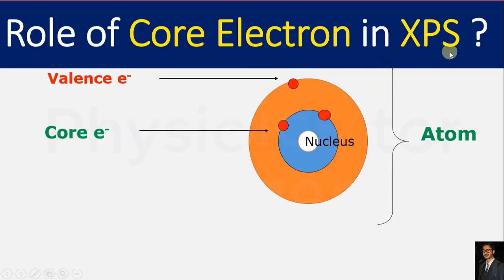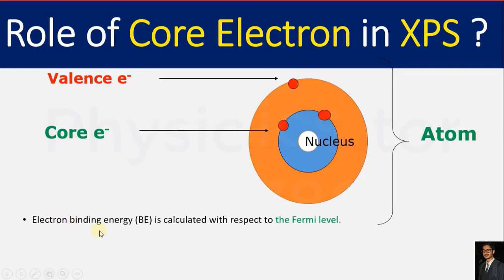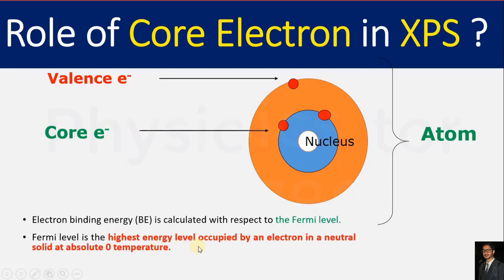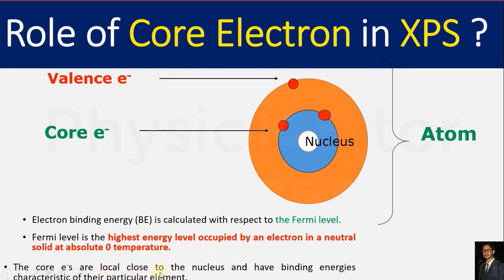Before understanding the working of XPS, we study the role of core electrons. As seen in the diagram, the outermost shell electron is known as the valence electron — also called the Fermi electron — while inner electrons are core electrons. Electrons in the outermost shell have a force of attraction with the nucleus. When an electron absorbs energy it moves outward, and the binding energy is calculated with respect to the Fermi level. The Fermi level is the highest energy level occupied by an electron in a neutral solid at absolute zero temperature.